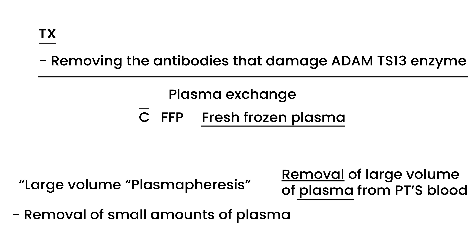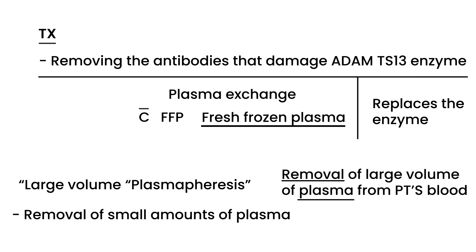When you replace with fresh frozen plasma from a donor, what that does is replace the ADAMTS13 enzyme with normally functioning versions. You remove the faulty antibodies by removing large volumes of plasma, and then when you give the fresh frozen plasma, you're replacing it with enzymes that are actually working properly. So essentially, you take out the bad and put in the good.